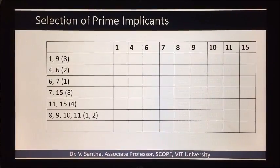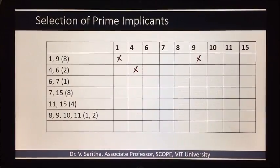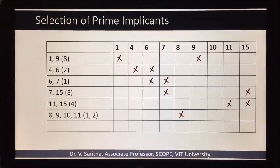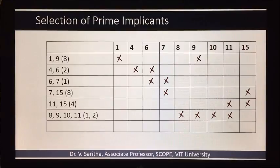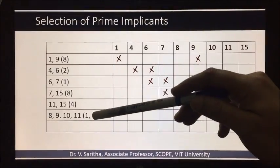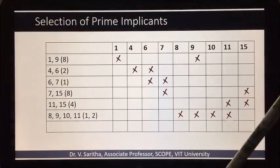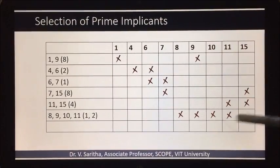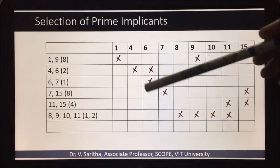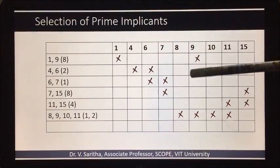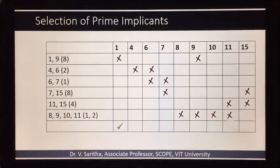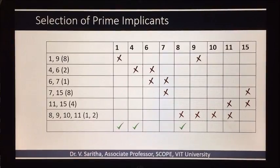And the second step, selection of prime implicants - we have to cross all the terms which are given in the determined prime implicants from step one. One, nine means one and nine we will give here. Four and six, six, seven like this we will cross it. And then we have to observe each column which is having a single cross mark and give a tick down at the end like this.